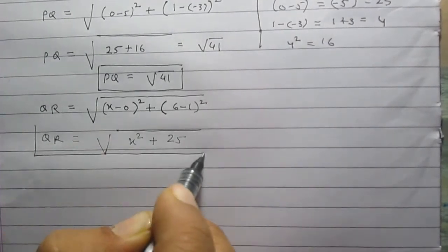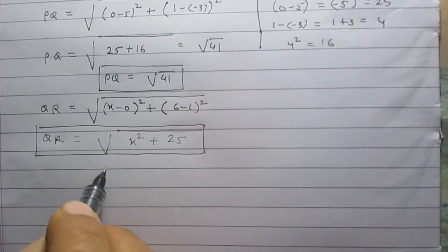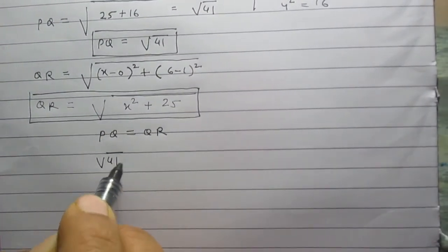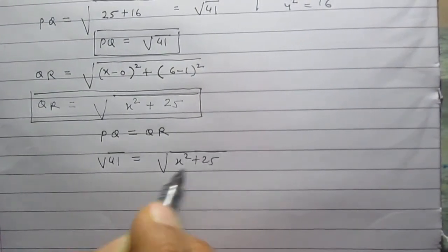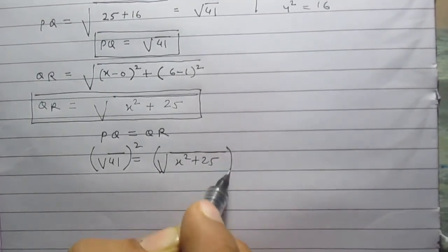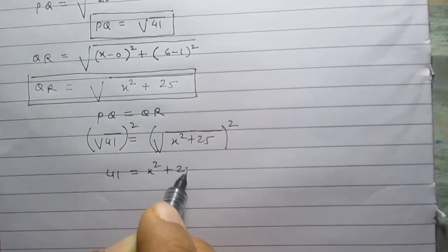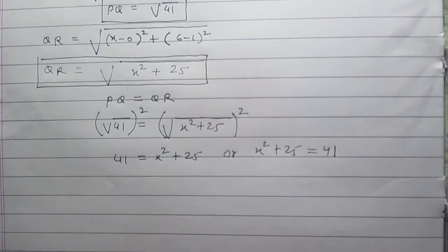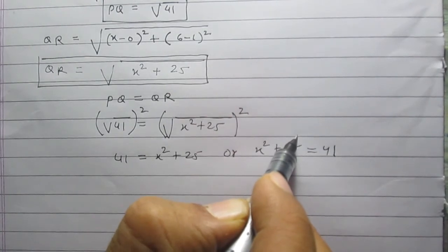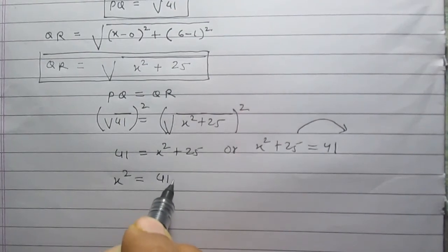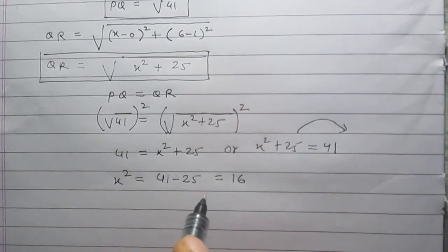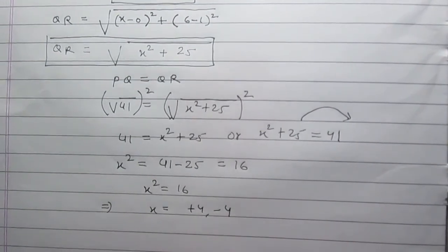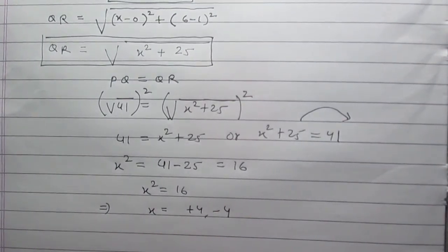We are given that PQ is equal to QR. So, square root of 41 is equal to square root of x squared plus 25. On squaring both sides, we get 41 is equal to x squared plus 25, or x squared plus 25 equals 41. Transposing 25 to the right hand side, x squared equals 41 minus 25, which is 16. Therefore, x is equal to plus 4 or minus 4.